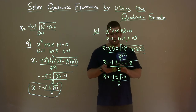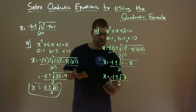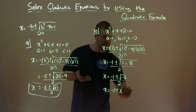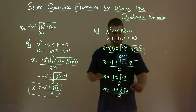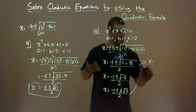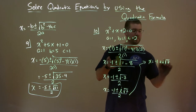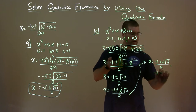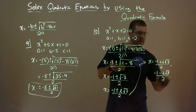Well, now we have to use the rules of imaginary numbers. The square root of negative 7 means we rewrite this as negative 1 plus or minus i times the square root of 7, over 2. So we can write this out as two values: x equals negative 1 plus i times the square root of 7, over 2, and x equals negative 1 minus i times the square root of 7, over 2.